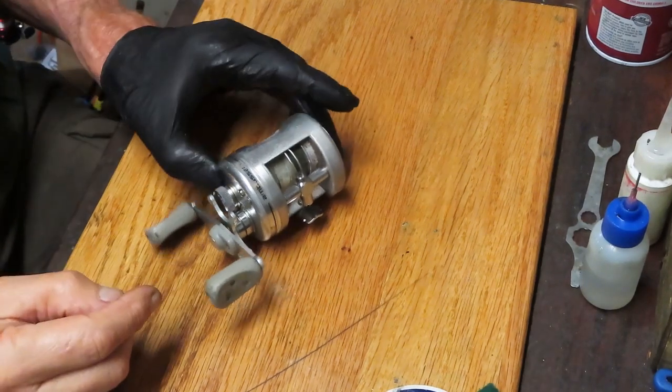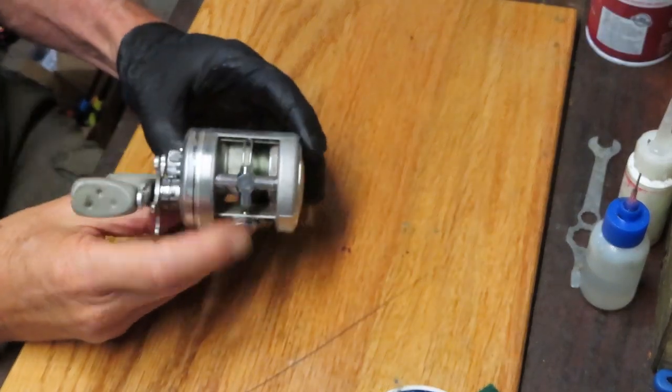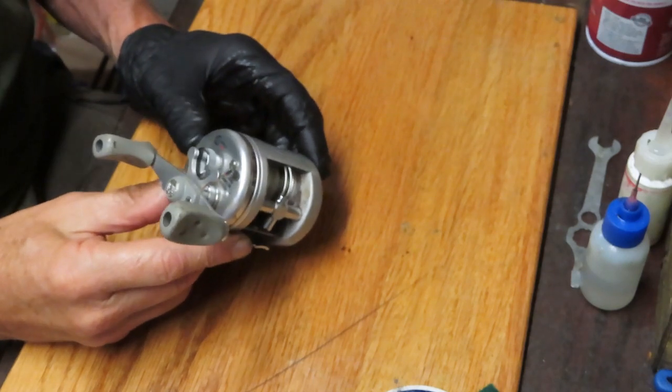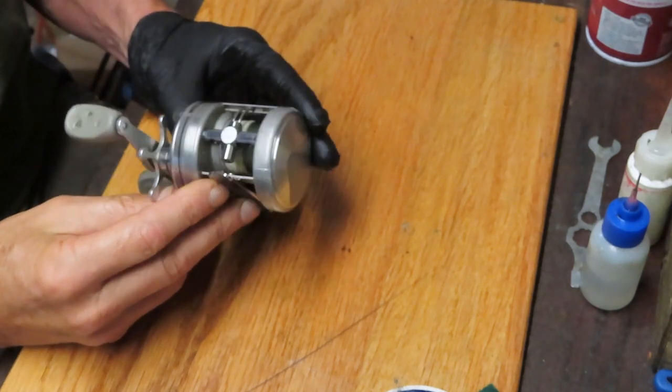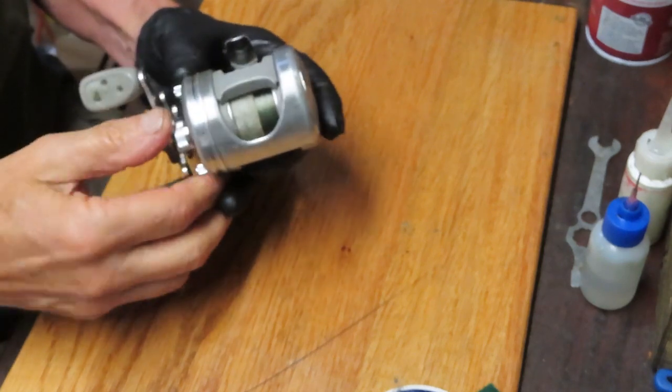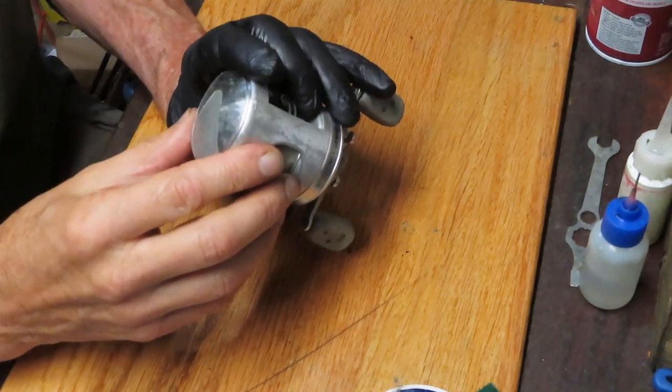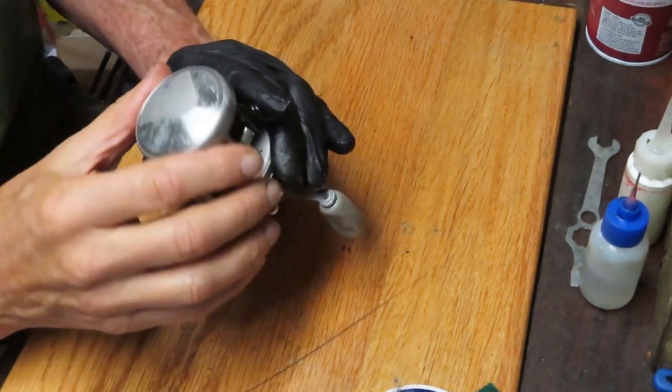Hi, this is Dennis with Second Chance Tackle. Today we've got an Ambassador here. This is the Silver Max Ambassador, I think it's the 3600. It's well used, a lot of the indications are sort of worn off, but that's alright.